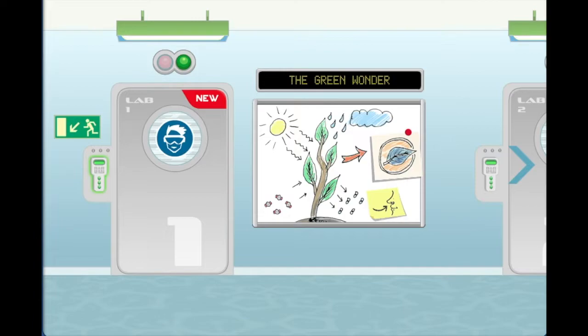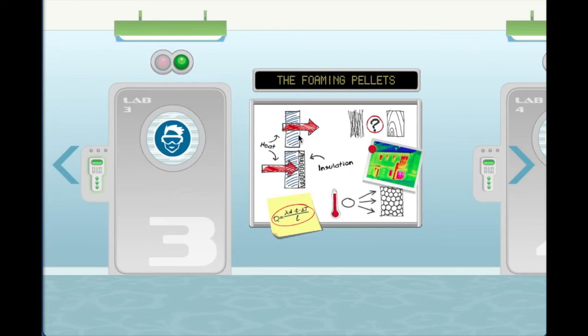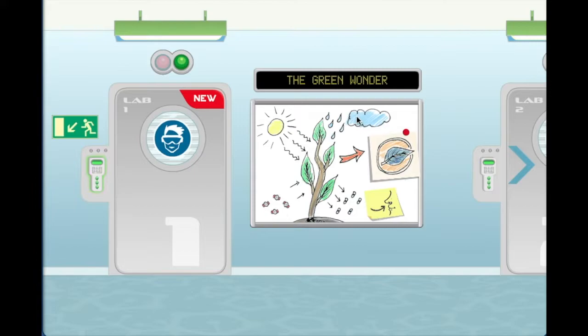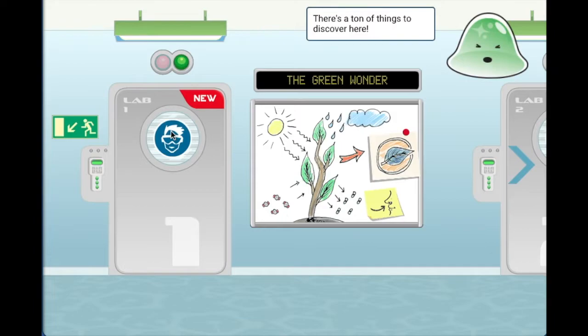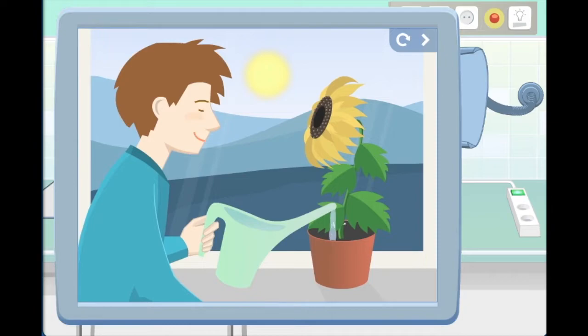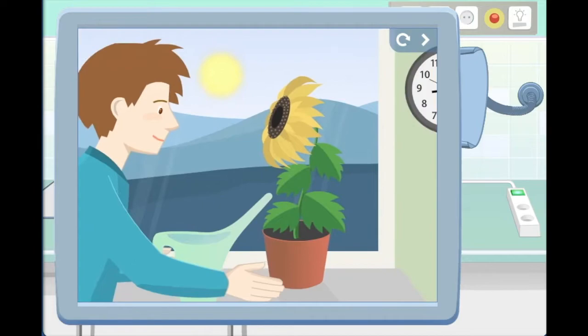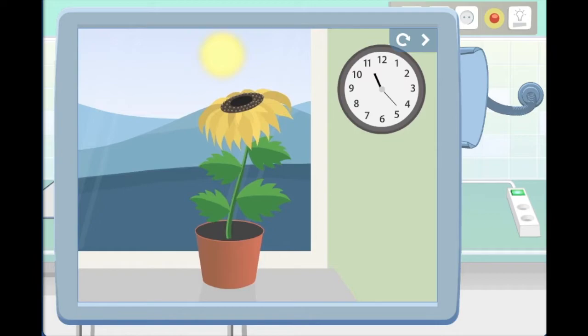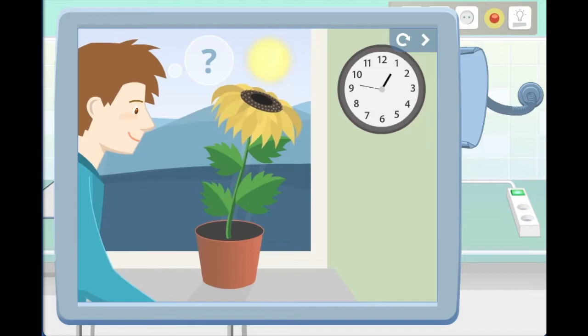So behind every door is a different laboratory where we can experiment. First of all, I've done a green wonder experiment which is in photosynthesis. I chose this. So let's enter this laboratory, the green wonder. There's a ton of things to discover here. As Tobias is watering his sunflower, he notices something remarkable. His sunflower always points its head and petals toward the sun. So it moves with the sun throughout the day. But why does it do that? Why does it need the light?